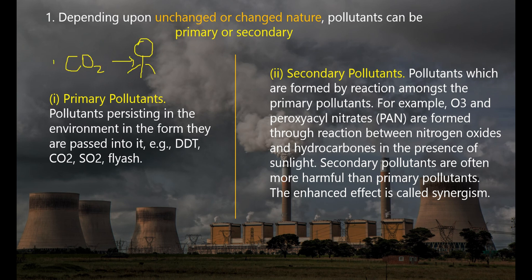Now, suppose CO2 — something that is made to have an effect. It is the primary pollutant. Examples of primary pollutants include CO2, SO2, and fly ash.